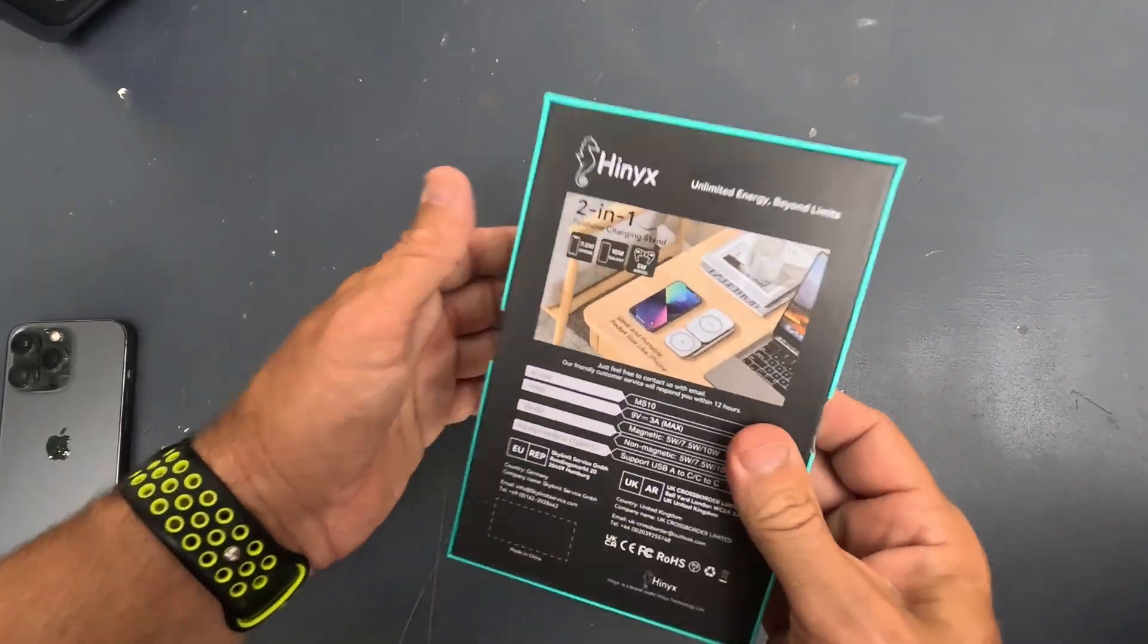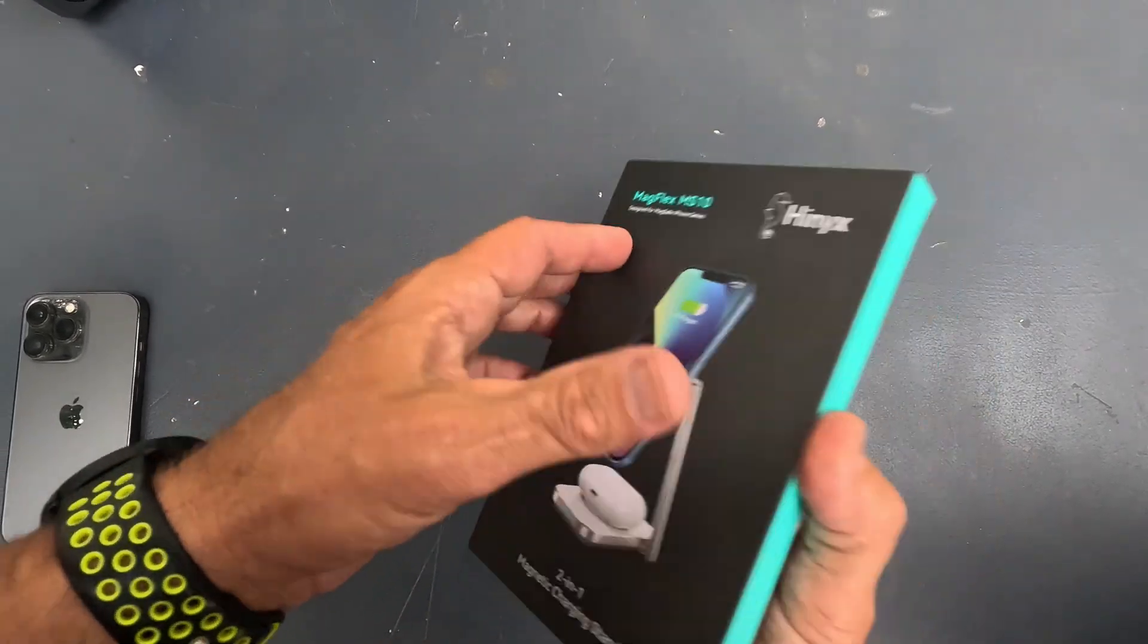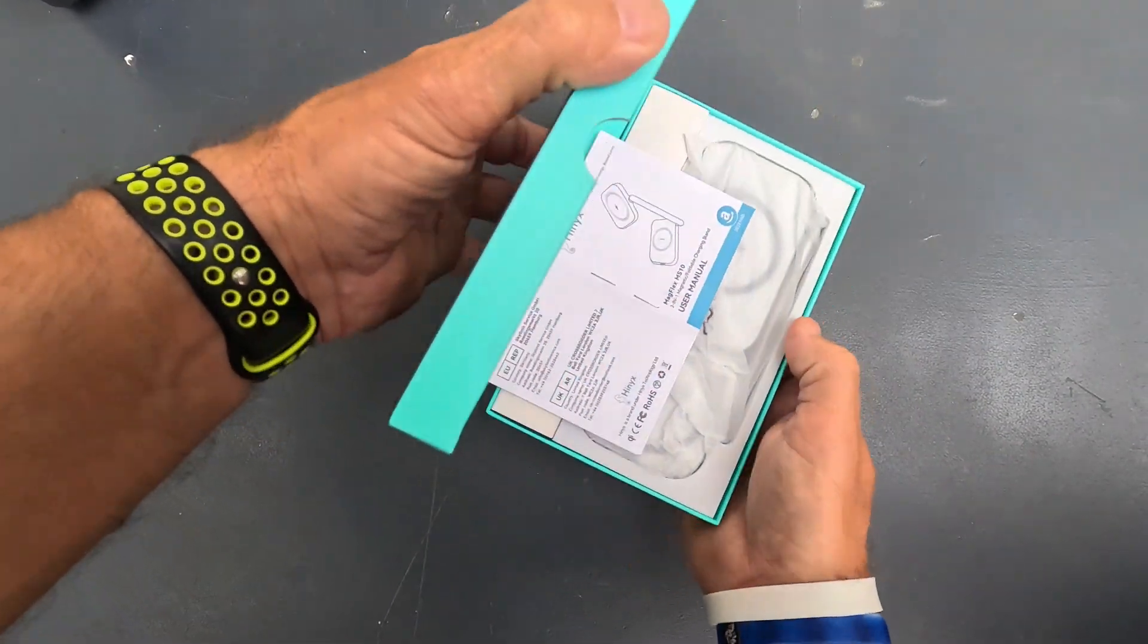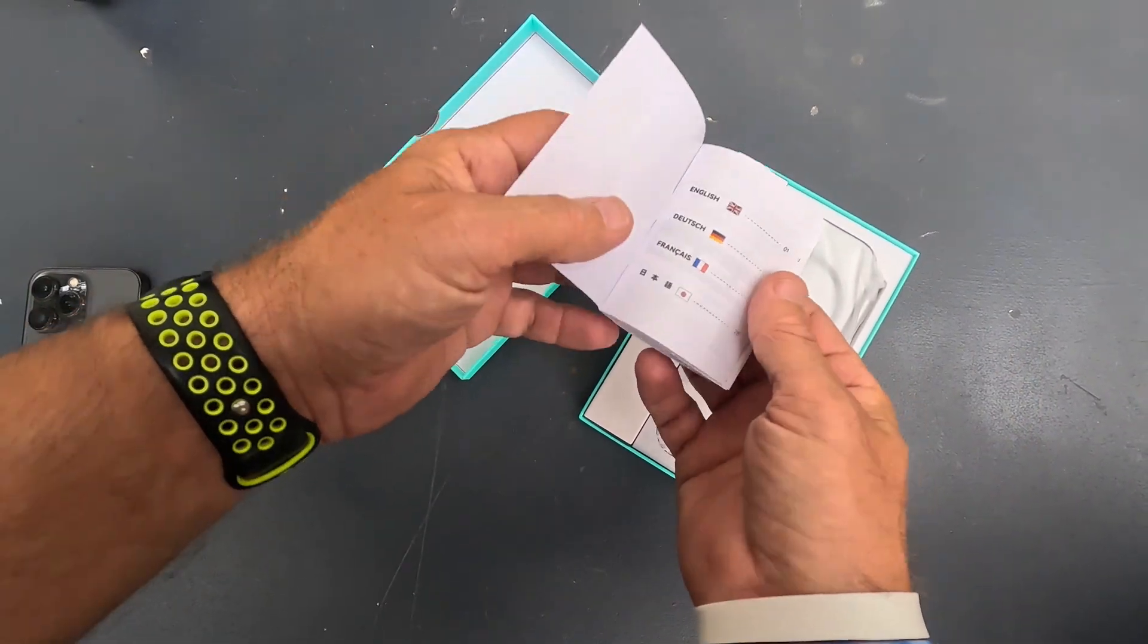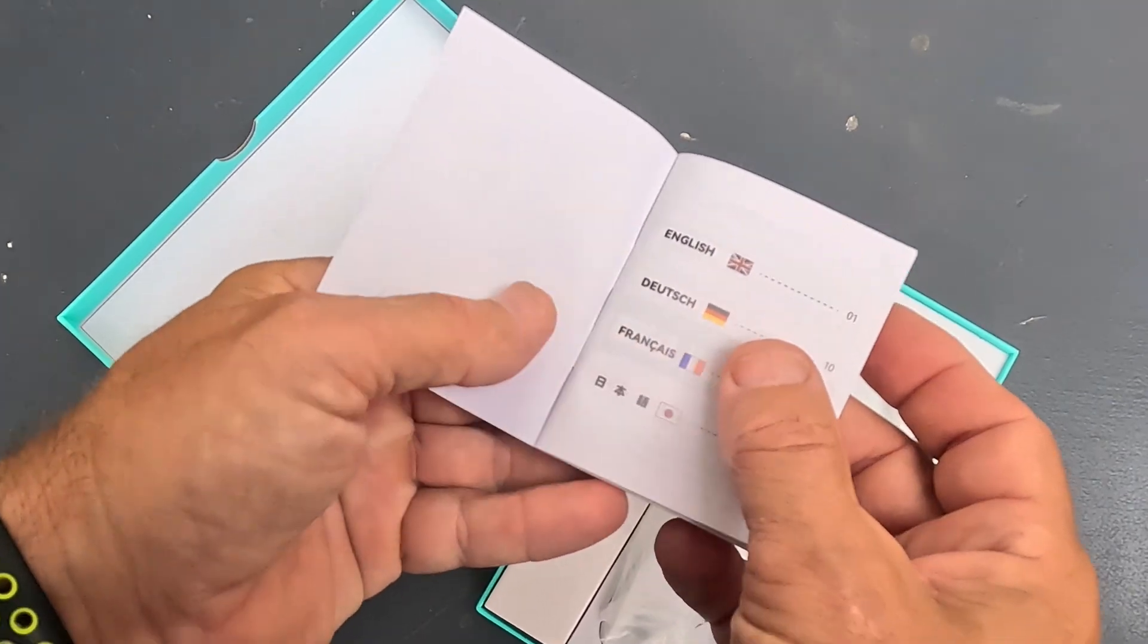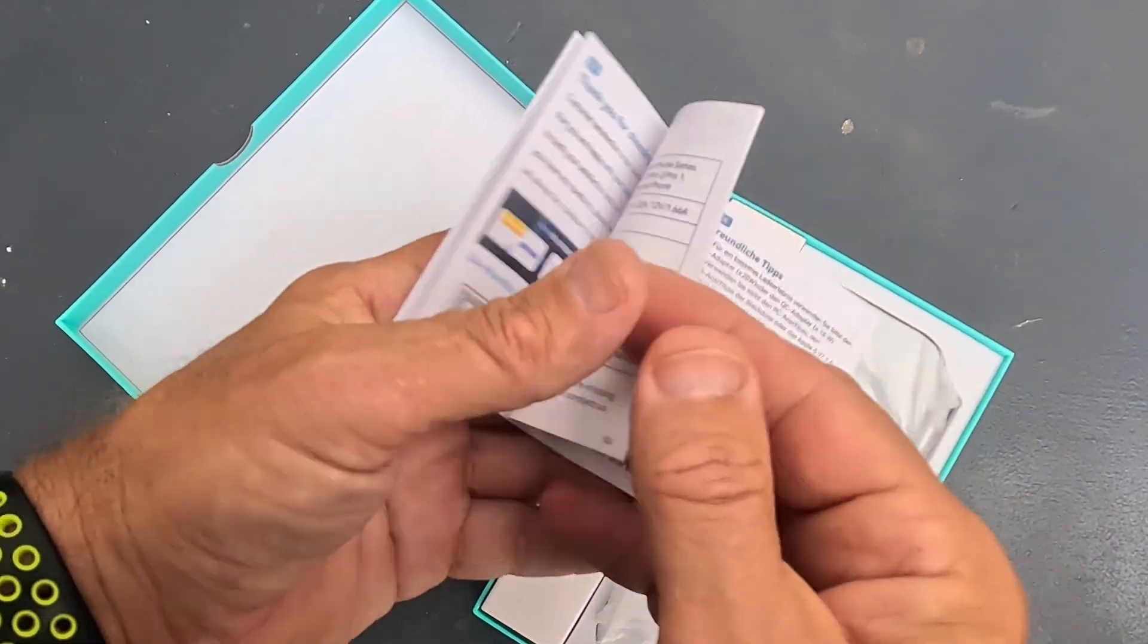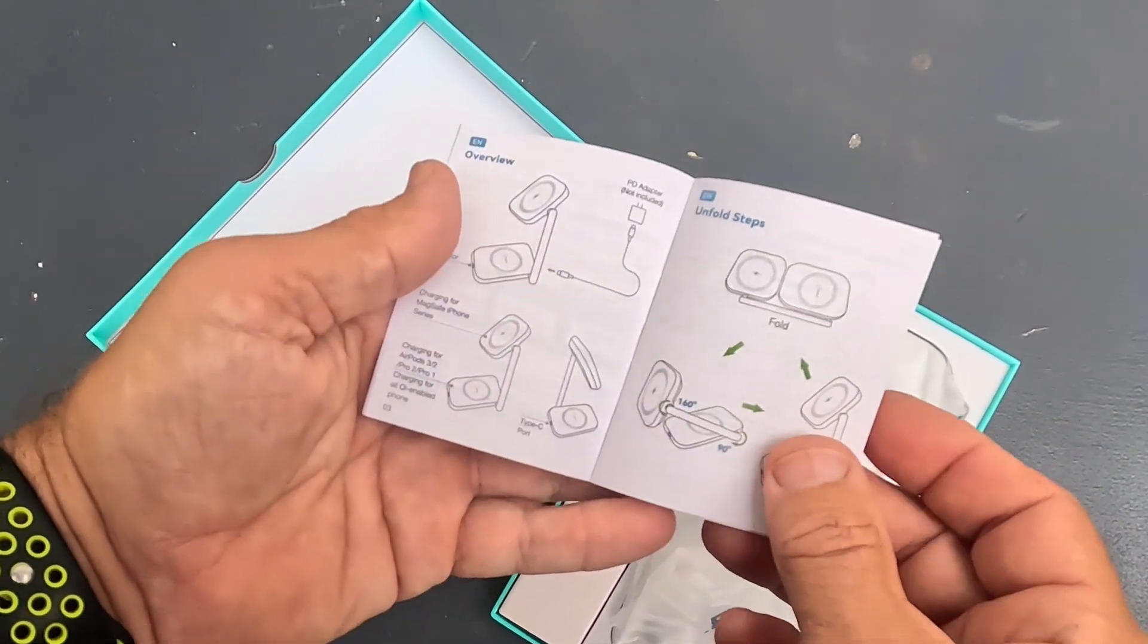Alright, so really nicely packaged and this thing feels sturdy. Just feeling of it, it does not feel cheap at all. This thing feels awesome. First thing you're going to do when you open it up, you get a little set of instructions. English looks like Dutch, and French and Chinese. You don't see many Dutch, French, and Chinese.